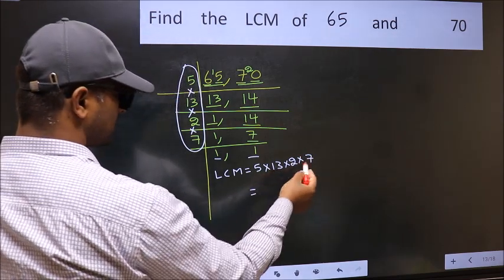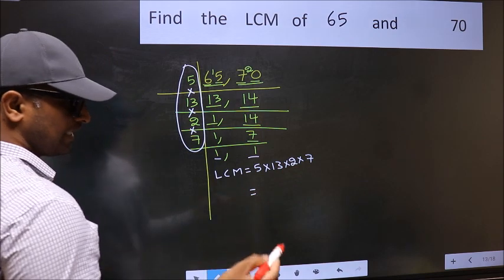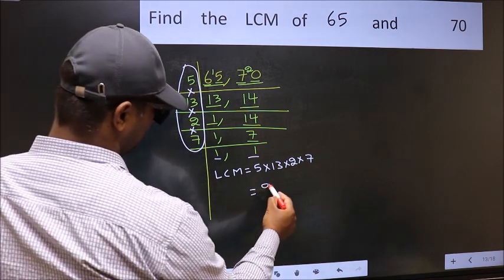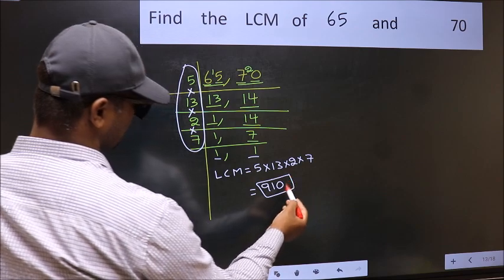When we multiply these numbers, we get 910 as our LCM.